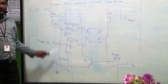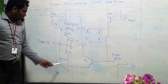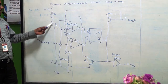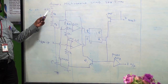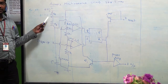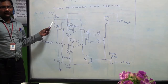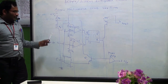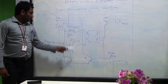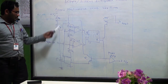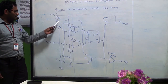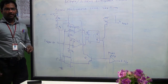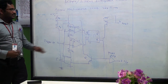While charging, the capacitor charges towards Vcc through RA and RB, so the charging time constant is (RA + RB) × C. While discharging, the capacitor discharges through RB, so the discharging time constant is RB × C.